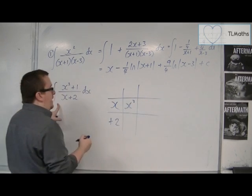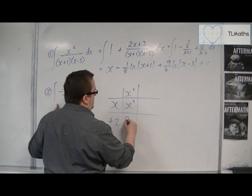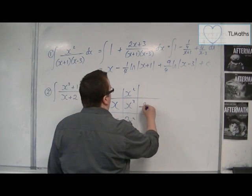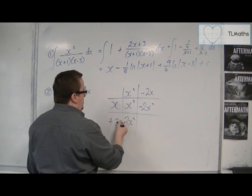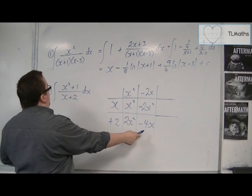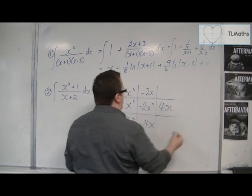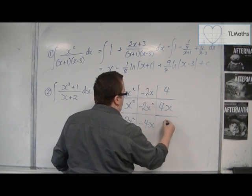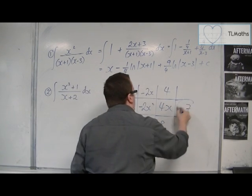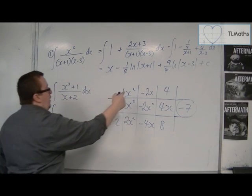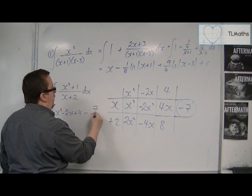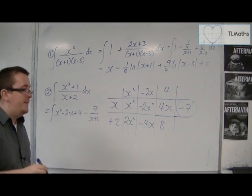So the x+2 goes down the left-hand side. We need an x cubed, so we'd have to have x squared there. x squared times 2, so 2x squared. Now, we don't have any x squared in the numerator, so we'd have to have minus 2x squared. So we're going to have -2x there. -2x times 2 is -4x. We don't have any linear term there, so we'd have to have 4x here to cancel it out. We'd have to have 4 there, so 4 lots of 2 is 8. We've actually got 1, so we'd have to have -7. And that is the remainder.